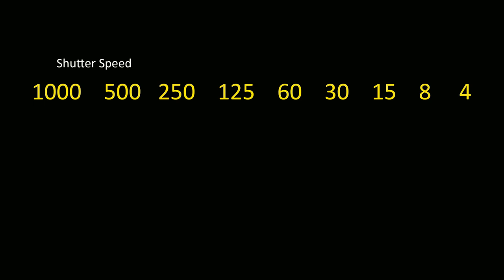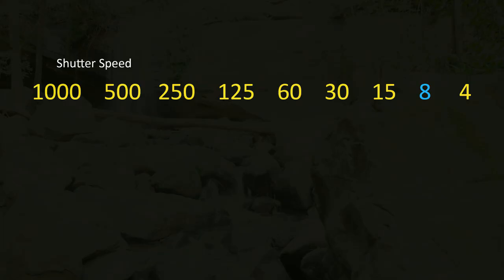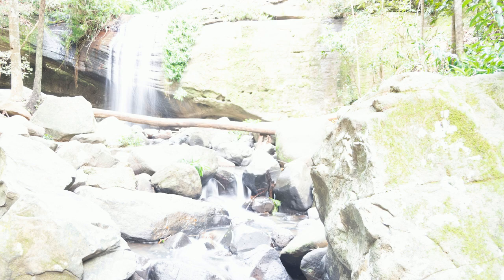Imagine you're shooting a waterfall and your exposure is correct at a thousandth of a second. Now you want to slow the shutter speed down to an eighth of a second to get that nice soft movement effect. But when you do that, you're going to let in a lot more light. In fact, if you consider that each full stop jump in the shutter speed keeps the shutter open for twice as long, you're now letting in 128 times as much light as you were before. So how do we do this without massively overexposing the second photo?